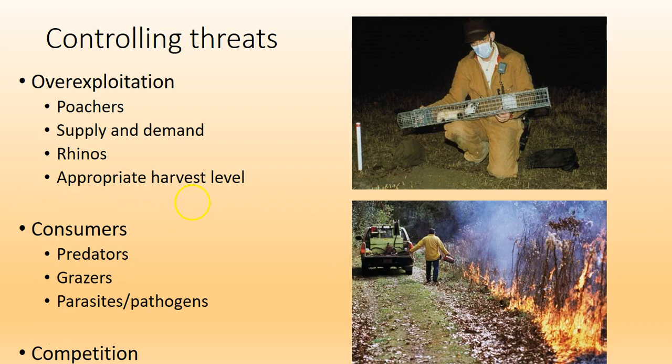You also need to have appropriate harvest levels. As discussed in chapter 12 part 2, optimal sustainable yield in fisheries means taking as many fish as you can to help people without taking so many that the next year's population is affected. You also have to look at interactions with predators — are there invasive species predators? If the species are grazers, do they have what they need? Can they use their regular patterns? And parasites and pathogens have to be treated.